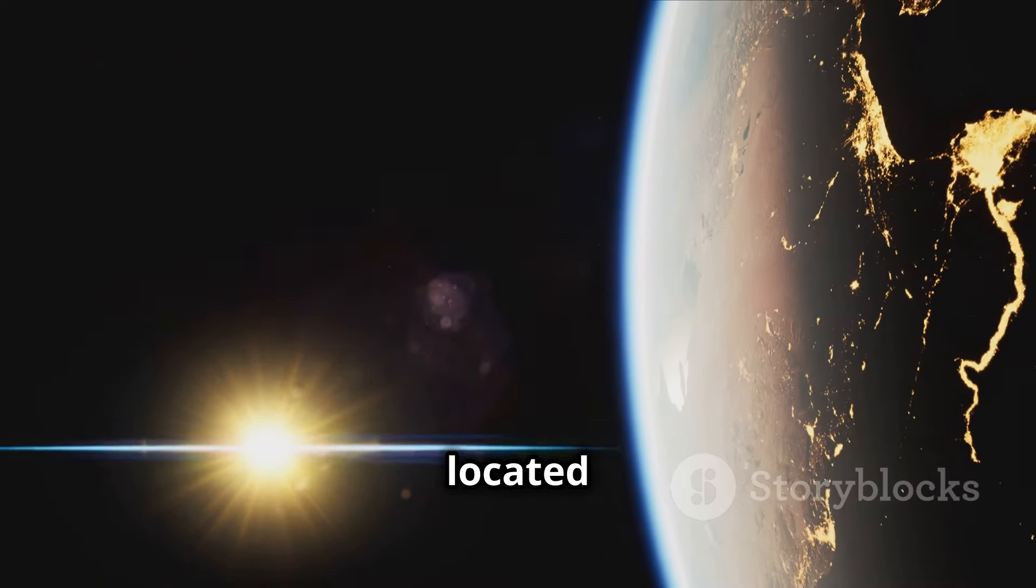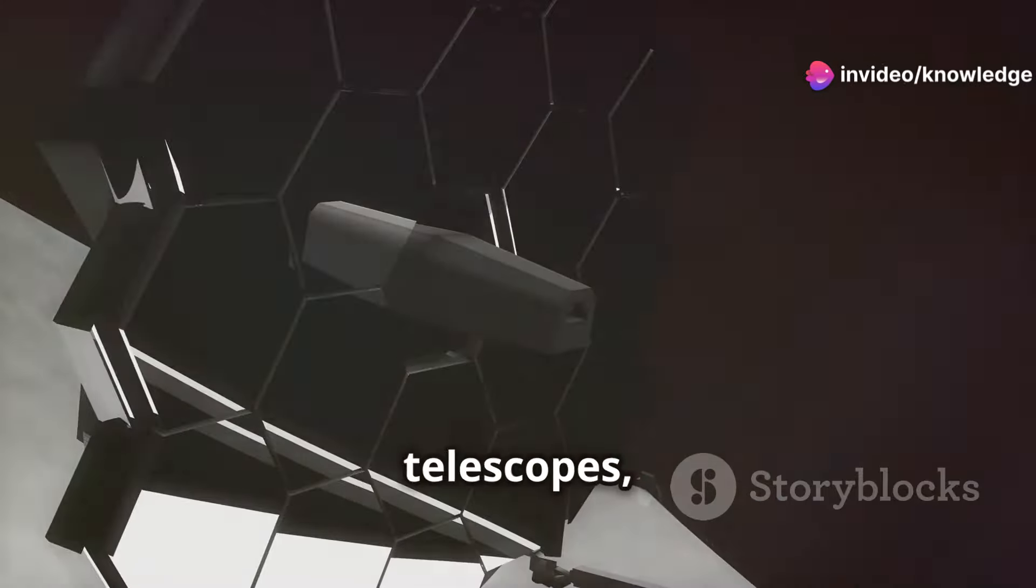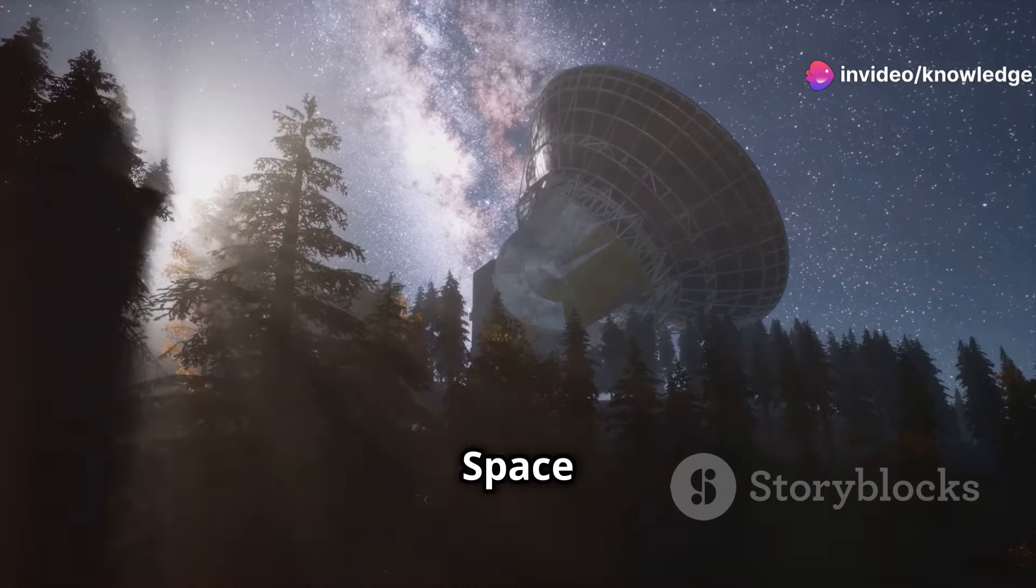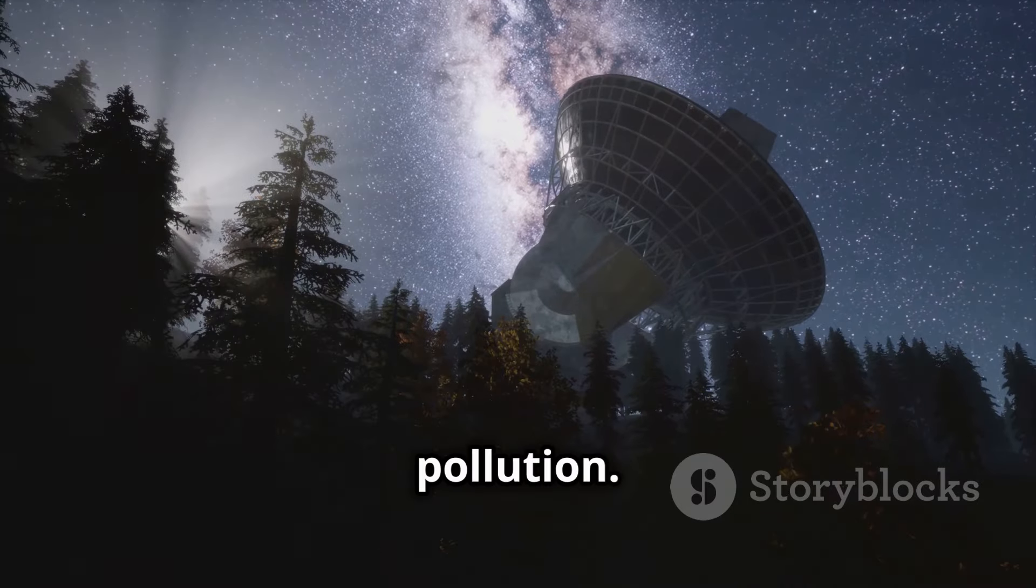Next there's L2, located on the opposite side of Earth from the Sun. This is a prime spot for telescopes like the James Webb Space Telescope, allowing astronomers to get a clear view of the cosmos without Earth's light pollution.